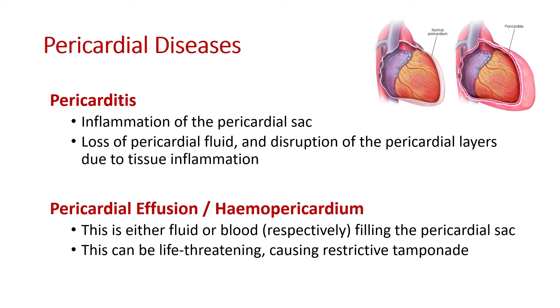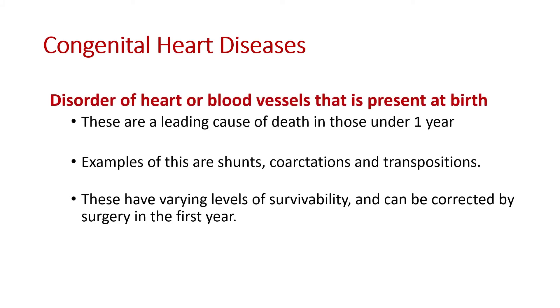The last umbrella term is congenital heart disease — a huge spectrum, some presenting in childhood, some not until adulthood, but actually a leading cause of death in children under one year. These are disorders of the heart or blood vessels present at birth. You get shunts, coarctations and transpositions. A shunt is where blood moves from one place to another abnormally; a coarctation is an abnormal narrowing of a blood vessel; a transposition is where blood vessels are moved into the wrong place.